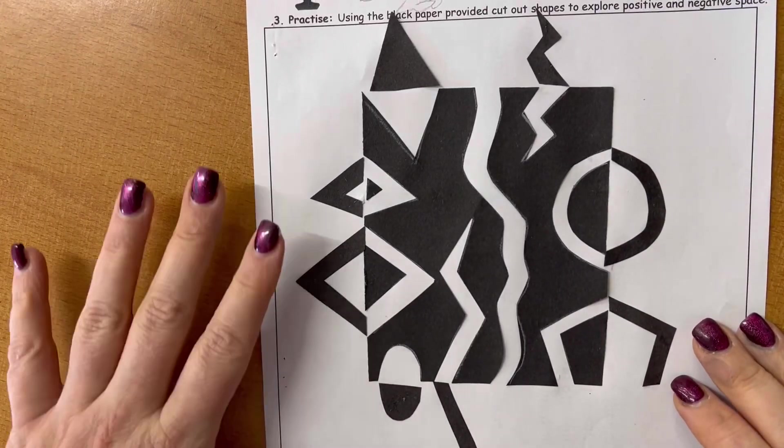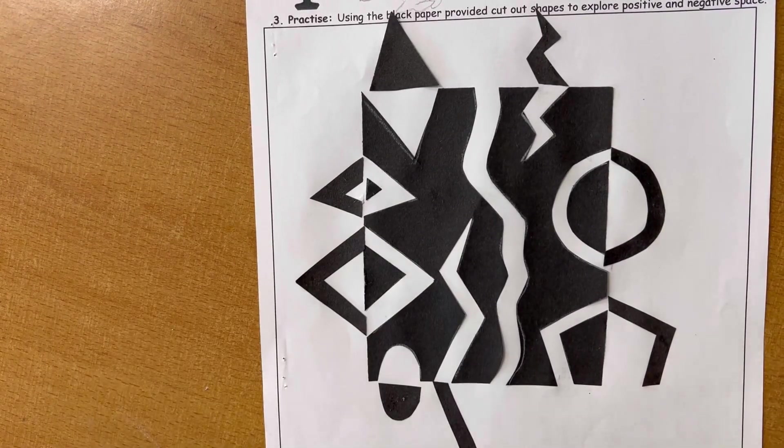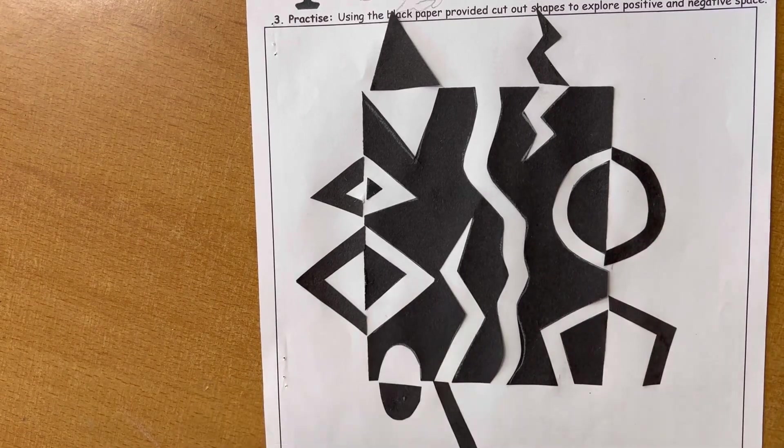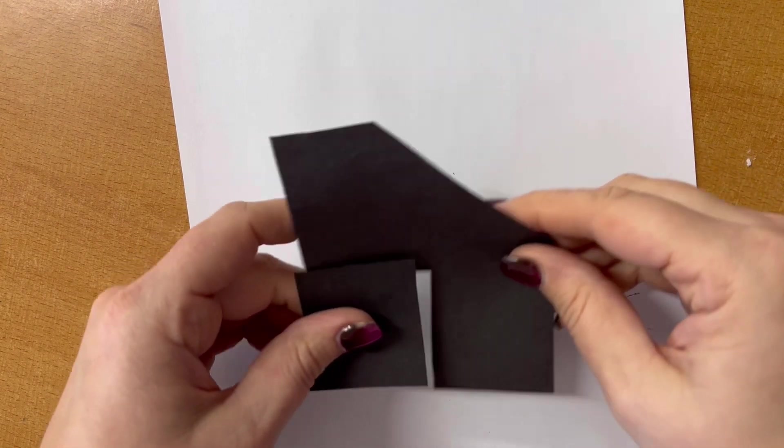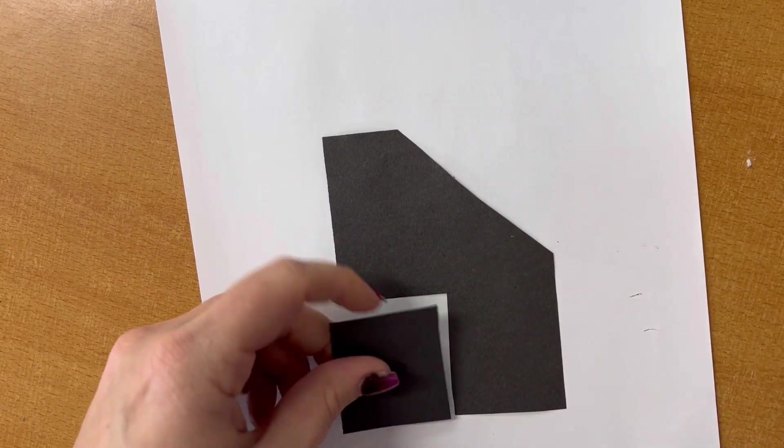So this is called a notion. So it's where positive and negative spaces have been used. To show you a modified version, if you would like to cut your square into slightly bigger shapes.